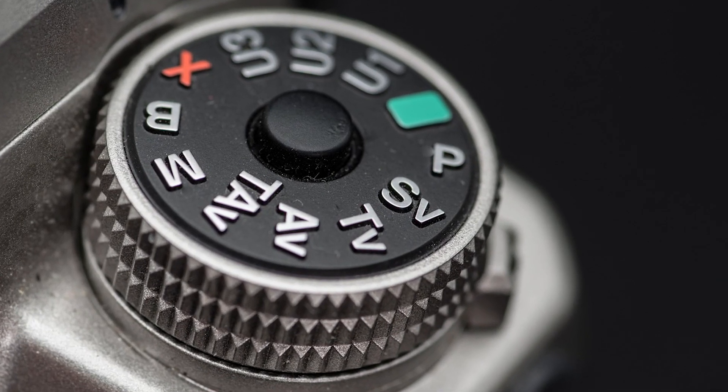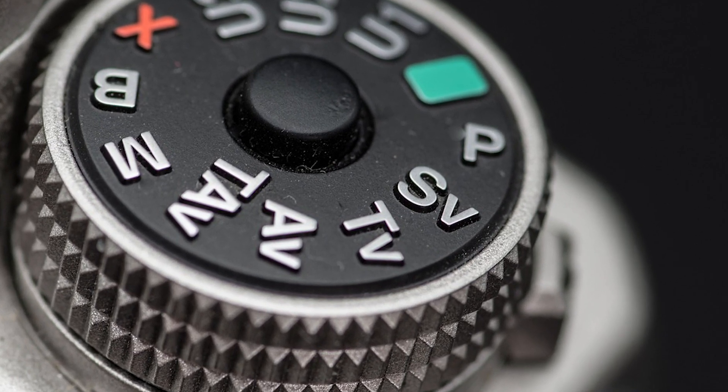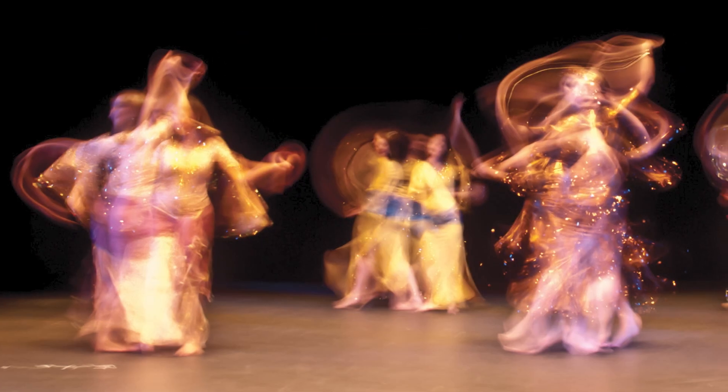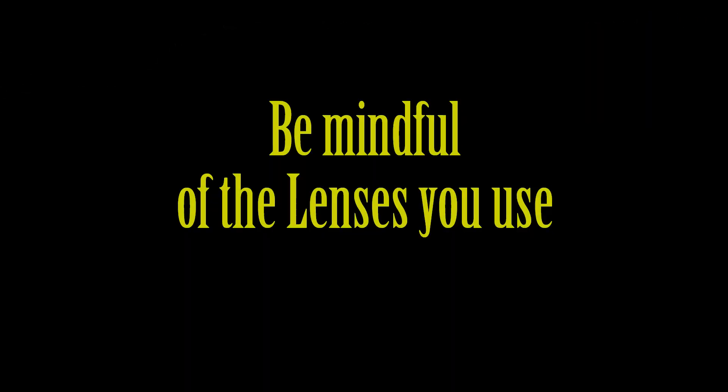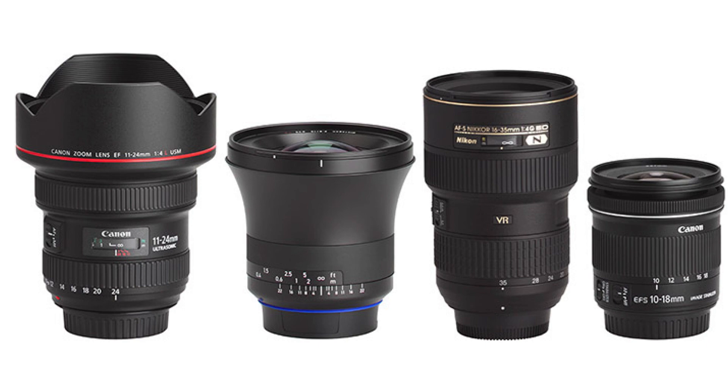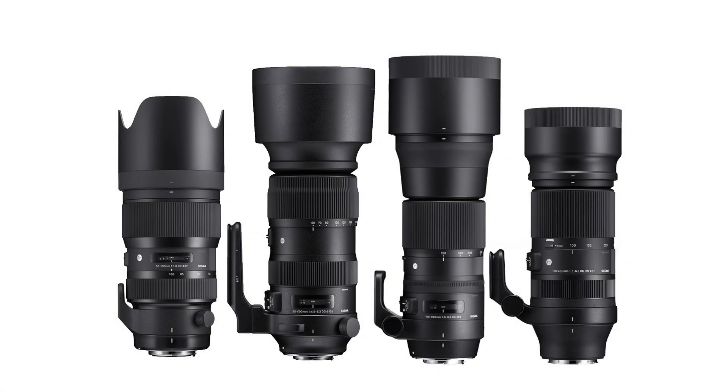When it comes to intentional camera movement, one of the critical factors to consider is your shutter speed. The duration of exposure directly influences the amount of blur in your shot. If you opt for a longer shutter speed, the blur will become more pronounced, adding a sense of fluidity and artistic motion to your images. However, be mindful of the lenses you use. Wide angle lenses work exceptionally well with longer exposures as they tend to complement the movement, resulting in captivating visual effects. On the other hand, telephoto lenses will exaggerate camera movements, potentially leading to overly distorted and chaotic images.